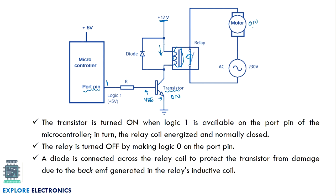The motor keeps rotating because of the AC voltage. When the port pin output is 0, the transistor will be in the off state. Because the transistor is off, the relay will be off. When the relay is off, it returns to the normal open position, so the motor will be off. This is how we can use a relay to make the circuit close or open.